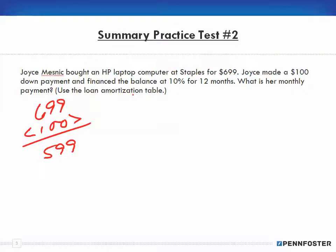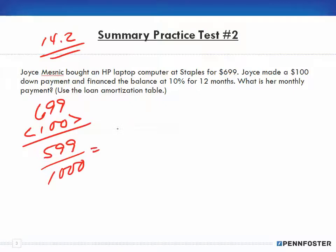We use the loan amortization table, which is Table 14.2. Remember that table is in thousands of dollars, so we take the five hundred ninety-nine and divide it by one thousand, giving us zero point five nine nine. Then we cross-reference on the table for ten percent and twelve months.